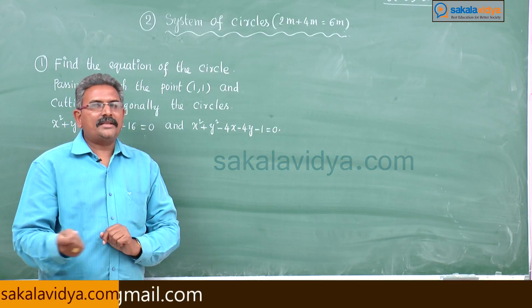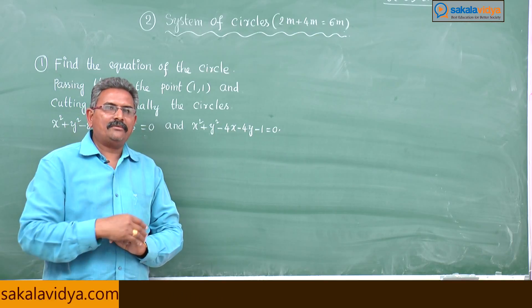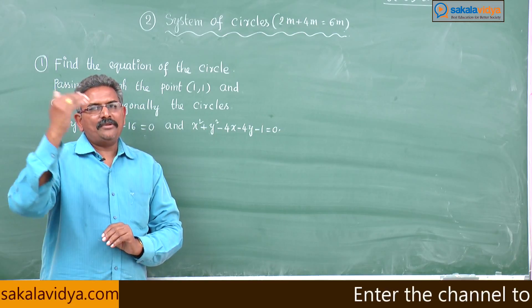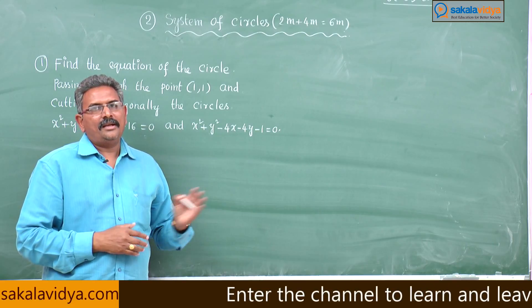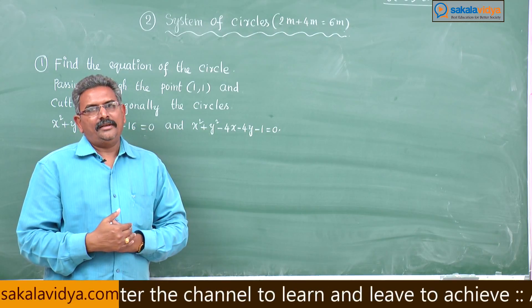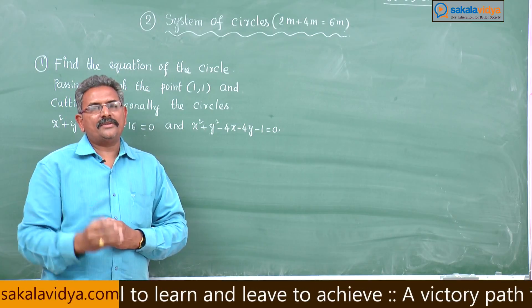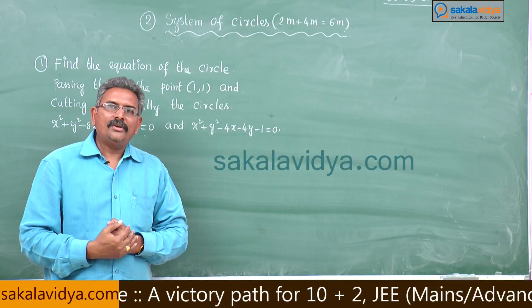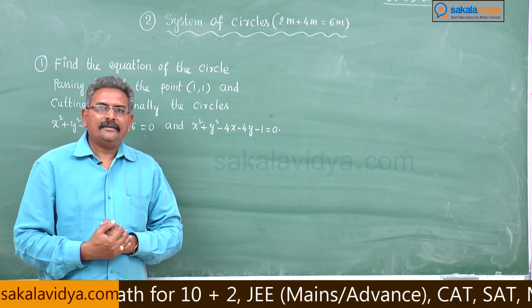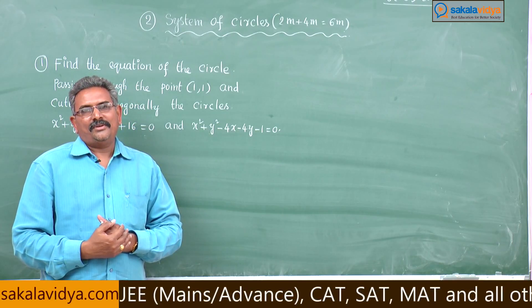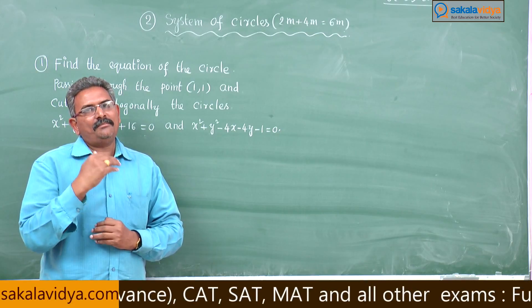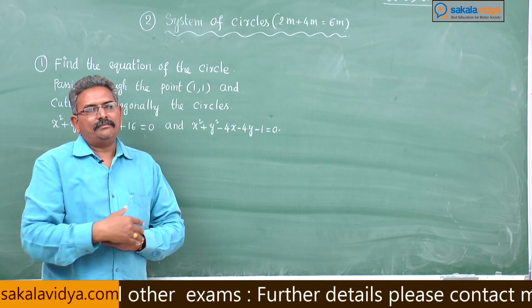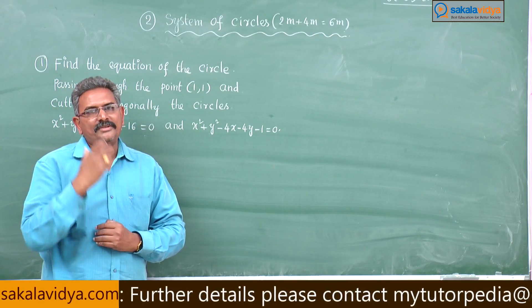Since the same equation S = 0 is orthogonal with the second circle, we get a second equation. Similarly, S = 0 is orthogonal to the third circle; applying the condition for orthogonality we get a third equation. Solving these 3 equations we get g, f, c values. Substituting g, f, c in S = 0, the required equation of the circle can be obtained. This procedure is very very important.